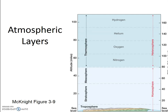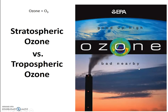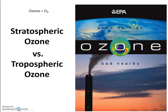Stratospheric ozone, on the other hand, is naturally created, and it protects us from damaging UVB radiation. This Environmental Protection Agency poster shows this clearly. Tropospheric ozone is bad — it damages our lungs. Stratospheric ozone is beneficial — it blocks ultraviolet radiation. So ozone is good up high, bad nearby.